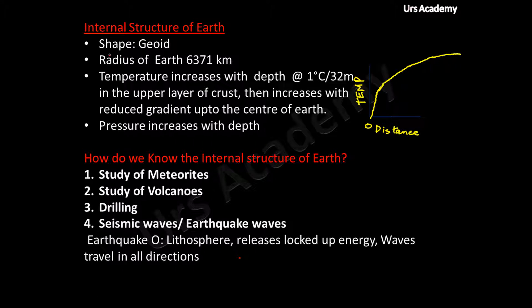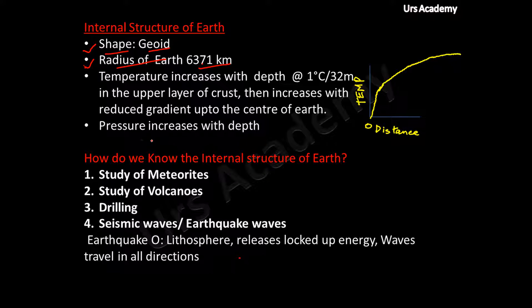First of all, the shape of Earth. It is a geoid — not a sphere, elliptical, or egg-shaped. Geoid means this word has come from Earth itself; 'geo' means Earth, so it has the shape of Earth — a unique shape. The radius of Earth is 6371 km; however, the equatorial radius is more than the polar radius because of flattening of Earth at poles, due to rotation of Earth with respect to the polar axis.